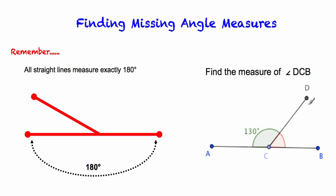To find the measure of an angle, so in this case, it's angle DCB. First, we need to realize how to read the angle. So in angle DCB, we know that C is the center of that angle.